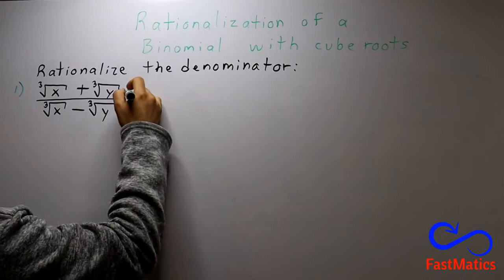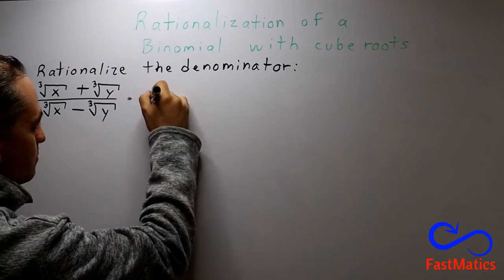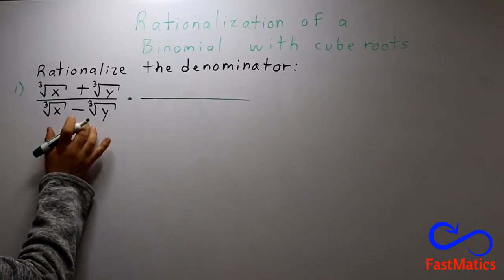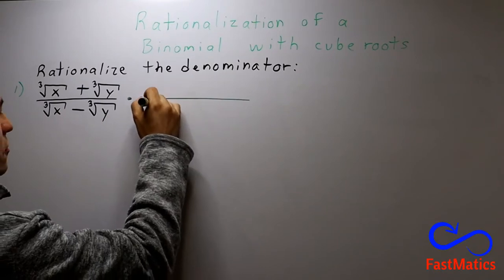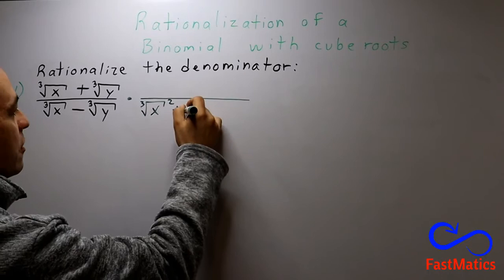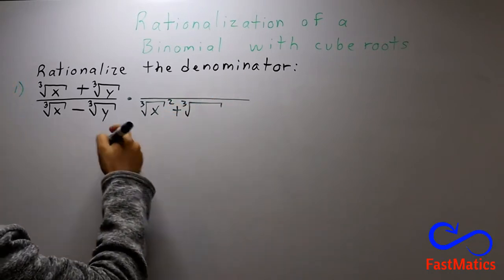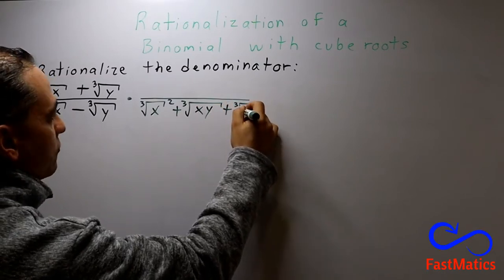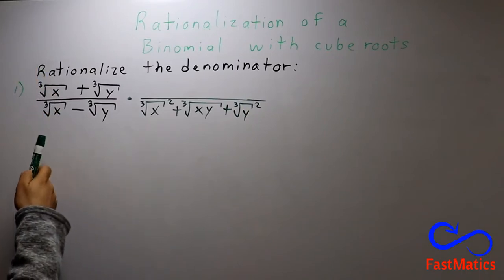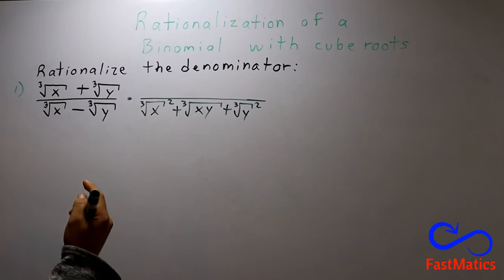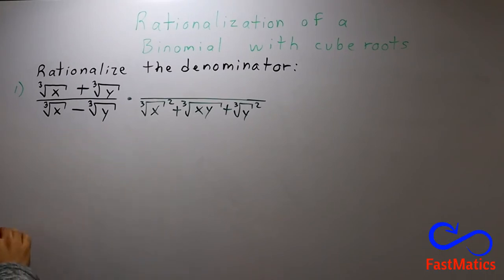So, if you remember special products, when you multiply two terms by the square of the first term, the opposite sign, the first term times the second term plus the square of the second term, you only have to raise those two terms to the third power. And that's it. That's why I'm doing that.